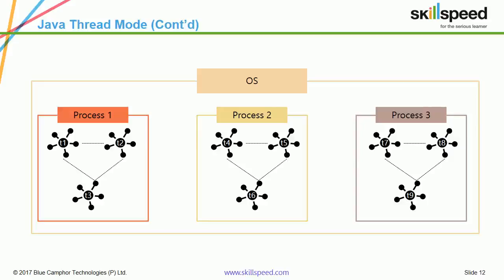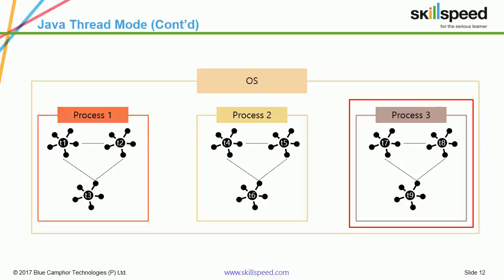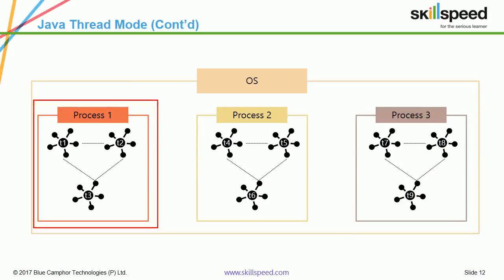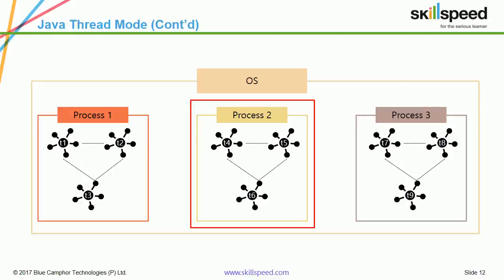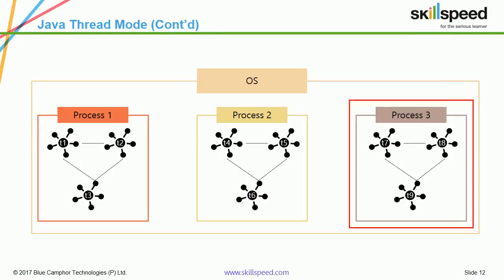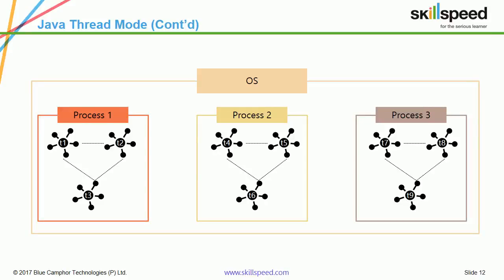Looking at the diagram in slide 11, Process 1, Process 2, and Process 3 are shown with threads T1, T2, T3 in Process 1; T4, T5, T6 in Process 2; and T7, T8, T9 in Process 3. These are three different processes in the same OS, and threads within the same process are interconnected. However, there is no connection between threads across different processes — for example, T3 and T4 are not connected, T6 and T7 are not connected. In that way, the threads are independent.